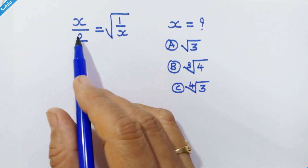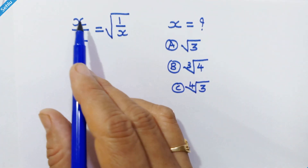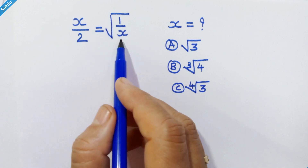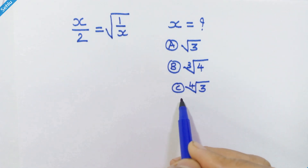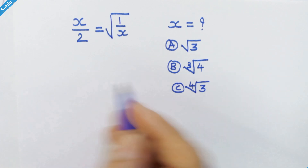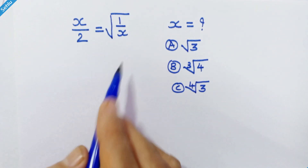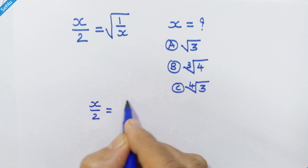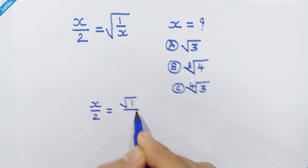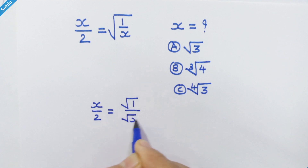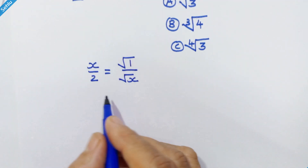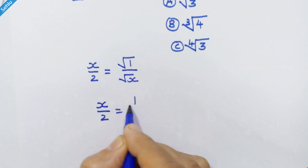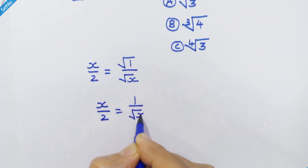Hello friends, here is the question: x upon 2 is equal to the square root of 1 upon x. We can write this equation as x upon 2 is equal to square root of 1 upon square root of x. Since square root of 1 is 1, we can also write this as 1 upon square root of x.